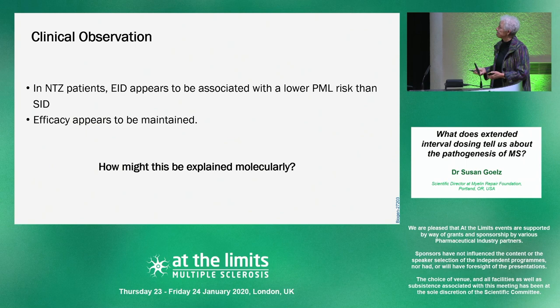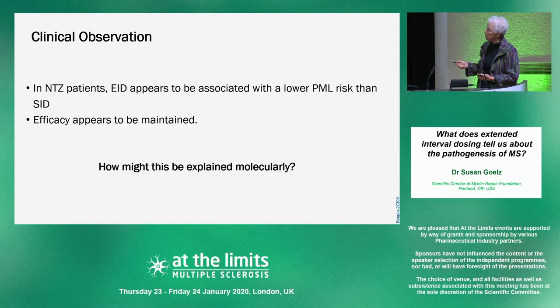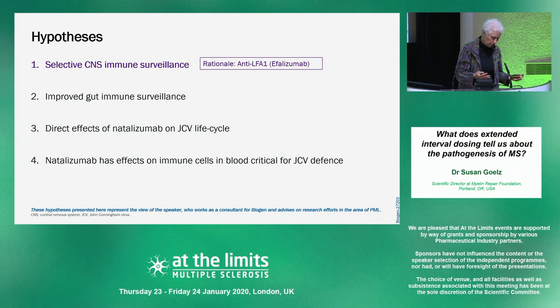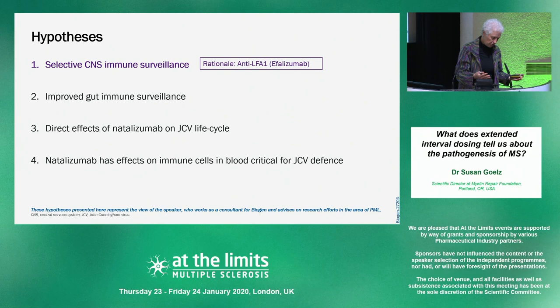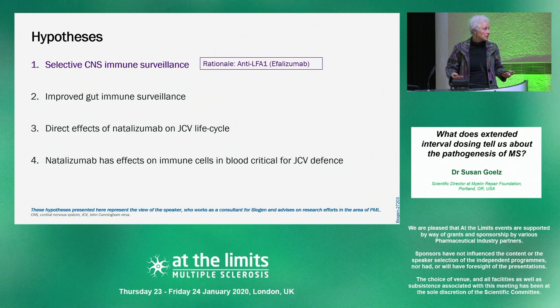So it looks like by going an extra week and a half or two weeks, we're changing the pharmacodynamics such that we're likely at a different part of this curve. How can we explain a reduced risk of PML while efficacy appears to remain the same? As good scientists, we sat down, acknowledged our hypothesis of how natalizumab worked, said the clinical data suggests maybe we were wrong, and revised our thinking. Our favorite hypothesis is selective immune surveillance.